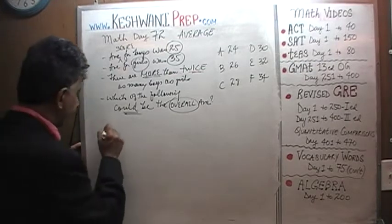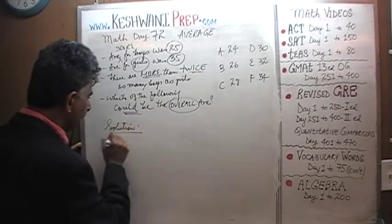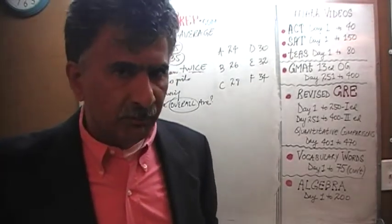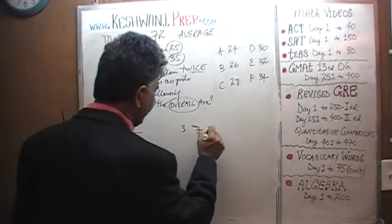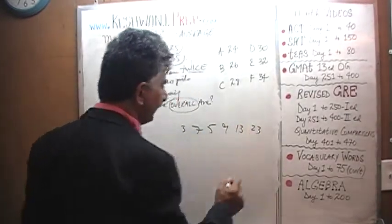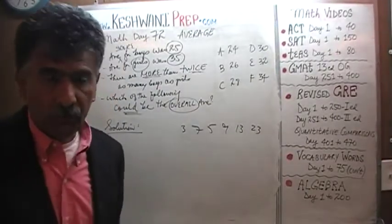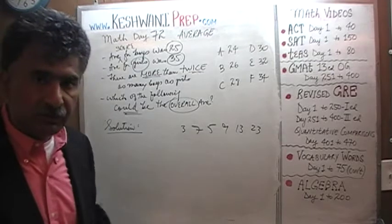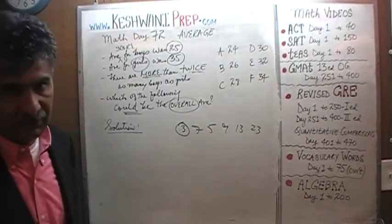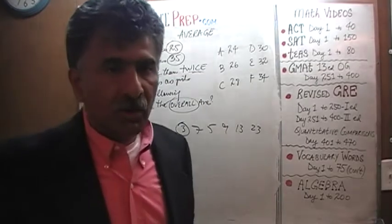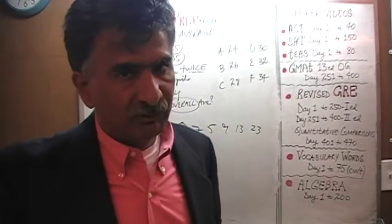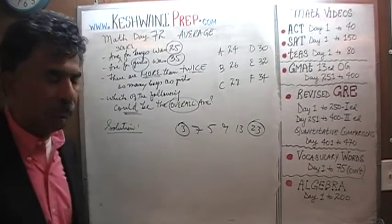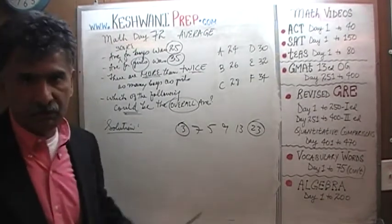Let's begin. First thing first — I am not going to write everything down; I want you to listen to me. When we have a whole bunch of numbers — for example, 3, 7, 5, 9, 13, and 23 — what can you tell me about the average? There is not much we can say, but we do know that whatever the average is, it cannot be less than 3. The average of a whole bunch of numbers can never be lower than the lowest number. We also know that the average can never be higher than the highest number. The average of these numbers will never be more than 23 and never less than 3 — it's going to fall between 3 and 23.